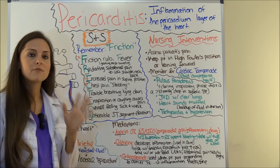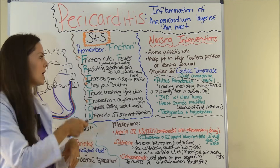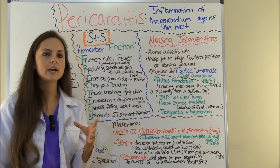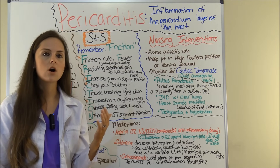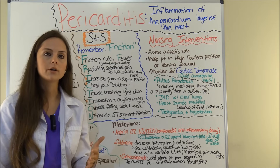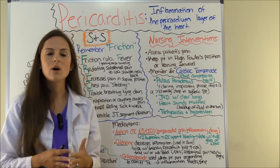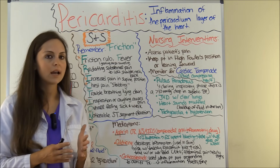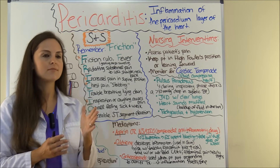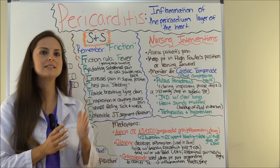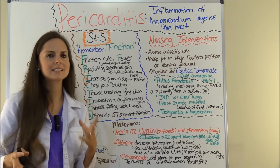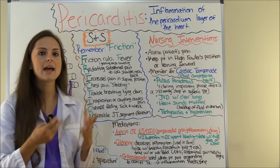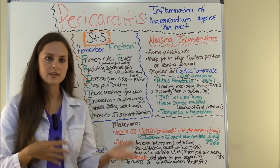F is for friction rub. When you listen with your stethoscope over the heart you will hear what is called a pericardial friction rub — it sounds like a grating, harsh sound of two things sliding against each other, sort of like sandpaper. The other F is for fever, which the patient will also have.